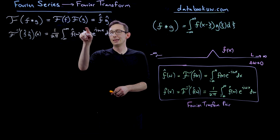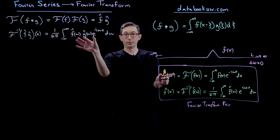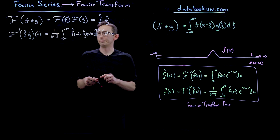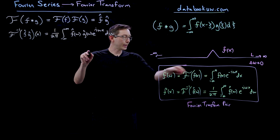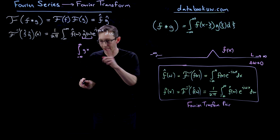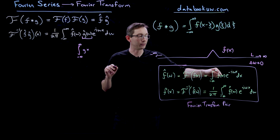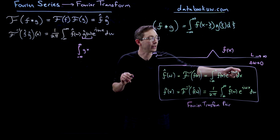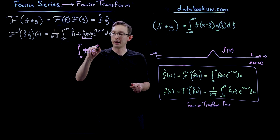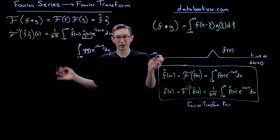Now what I'm going to do is replace g-hat with its integral definition — I'm going to take the Fourier transform of g and plug in the integral of g of x e to the minus i omega x. I'll introduce a dummy variable here: g of y e to the minus i omega y dy, because we're going to integrate out that dummy variable. That integral is equal to g-hat — that's the Fourier transform of g — and I'm just introducing a dummy variable y.